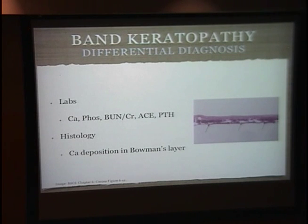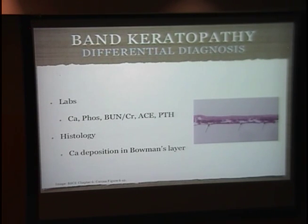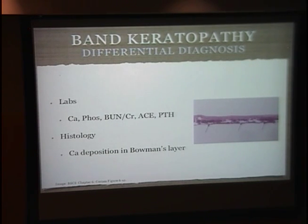To further narrow your differential, you can order a series of labs to check the patient's serum calcium and phosphorus, renal function, ACE if you're looking for sarcoid, and PTH for parathyroid. Histologically, you're going to see Bowman's layer calcium deposition as well as intercellular calcium deposition, but in cases with hypercalcemia, you'd actually see intracellular deposition as well.